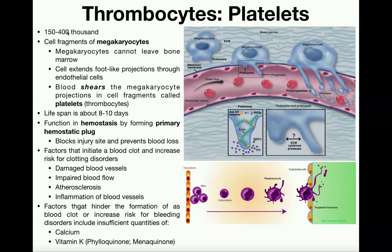When you have damage to the blood vessel, platelets are going to stick to the wall of the damaged blood vessel to prevent blood loss, and then they're going to trigger coagulation — particularly of the intrinsic pathway — to seal off that wound. In the process they're also going to release chemicals that cause vasoconstriction and chemicals that stimulate the healing process for that injury site.